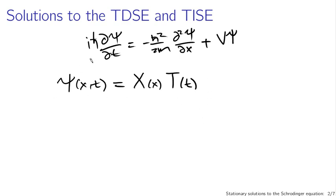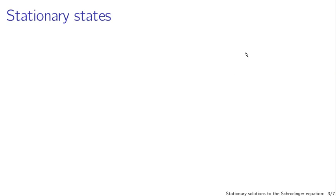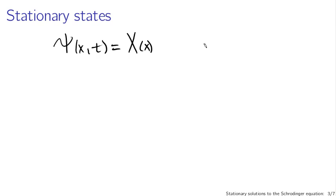Let's take a look at the properties of these separated solutions. First of all, these solutions are called stationary states. What we've got is ψ as a function of position and time equal to some function of position multiplied by some function of time. The time evolution part, from the previous lecture, was a solvable exponential: e^(−iEt/ħ). So the full solution is the spatial part times the time evolution part.